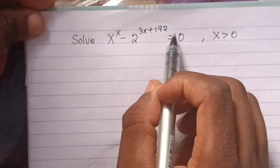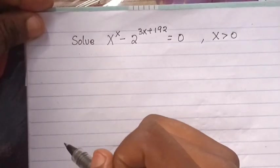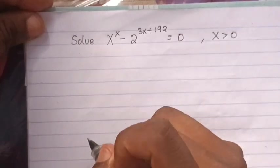You have been given this equation to solve for x, and x is greater than 0. How do you solve this exponential equation?